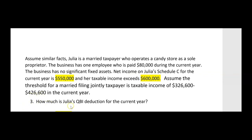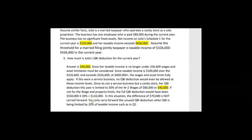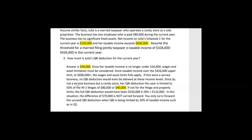We want her QBI deduction for the current year, but now she's in a much higher income situation. We need to approach this very differently. Since her taxable income is no longer under $326,600, wages must be considered, as well as the asset limitation — but they say there are no significant fixed assets, so we'll ignore assets. Wages must be considered since taxable income is over the $426,600 upper limit.